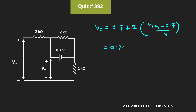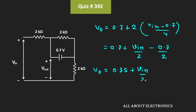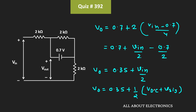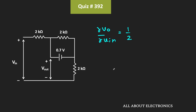That simplifies to 0.7 plus Vin/2 minus 0.7/2. Once again, the input has two terms: the DC term and the small signal term. That means Vout is equal to 0.35 plus (1/2) times (VDC + V_signal). But we are only interested in the small signal term, so if we differentiate this output with respect to the small signal input, then dVout/dVin comes out as 1/2, because the constant terms become 0. So whenever this diode is in the ON condition, the small signal voltage gain is equal to 1/2.